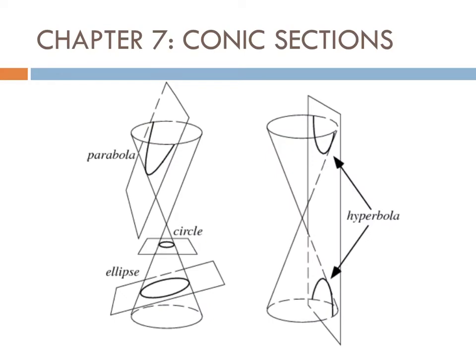Here's what I mean by slicing. If we take that double-napped right cone and slice it through the base and out the side — as shown in the picture — when you open up that face you're left with a parabolic shape. If the cut goes through the side and through the base, it will automatically be a parabola.